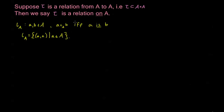We have identity relations that we're used to in the real numbers, integers, or any kind of number set. Equals is an identity relation — it's only true for two elements if the two elements on either side are actually the same element. For example, I would never say negative 1 equals 5; I would only say negative 1 equals negative 1.